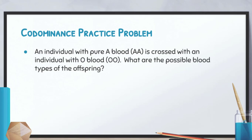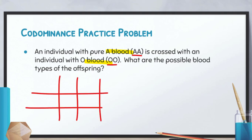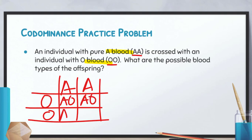Practice problem: an individual with pure A blood is crossed with an individual with O blood — what are the possible blood types of the offspring? Remember that blood type involves co-dominance. The genotypes are already given, so we can build the Punnett square easily. Both A and B are dominant to O, so in this case all offspring will have type A blood.